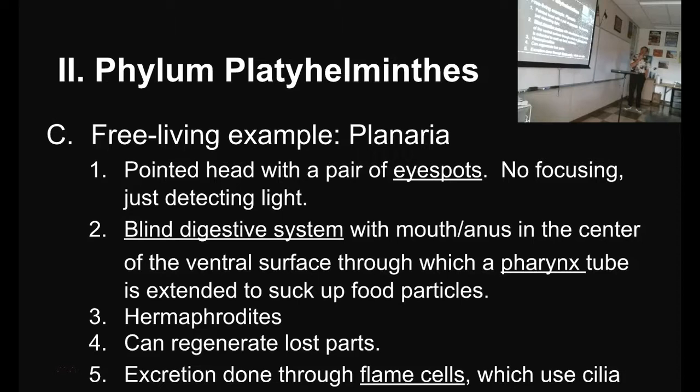Free-living flatworms do exist and they are called planaria. They have a pointed head with a pair of eye spots — they look like they've got a kind of arrow-pointed head. The eyes can't focus; they just detect light. It just knows if it's exposed or not, and it helps the worm hide by burrowing down, going under a rock or behind a plant. They have a blind digestive tract with a mouth and anus at the center of the ventral surface — the mouth is near the belly.